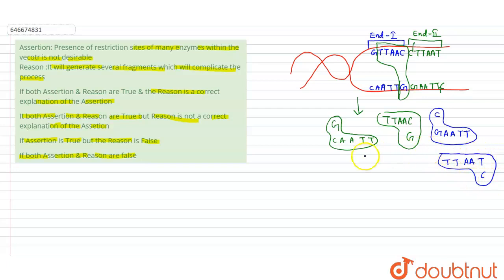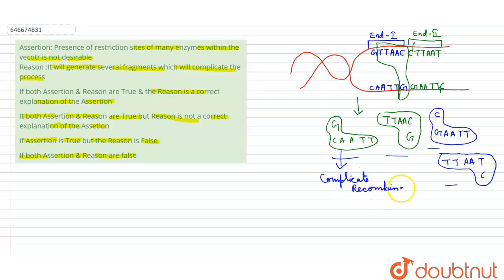You can see that from one DNA these four fragments are made, but we need only one specific fragment. This will complicate the process of recombinant DNA, and it will become difficult for us to select which one was our needed fragment. So looking at the assertion — presence of restriction sites of many enzymes within the vector is not desirable — yes, it is correct. More recognition sequences mean more confusion. The reason — it will generate several fragments which will complicate the process — is also correct.